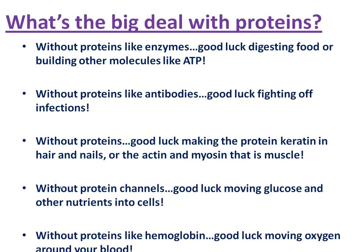So why make proteins? DNA has only the codes for making proteins, and proteins must be pretty important. Without proteins like enzymes — enzymes are a type of protein — you can't break down your food, and you can't build up other molecules like ATP. We have enzymes for both of those things, and literally hundreds of thousands of different other chemical reactions that need to be coded for.